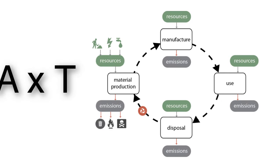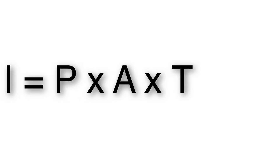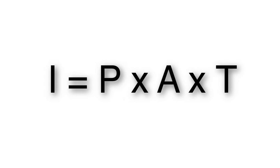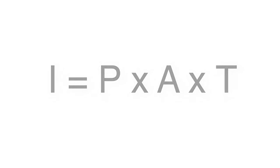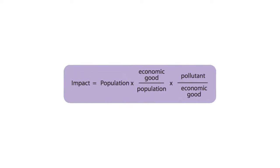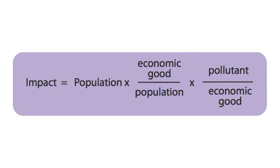Gains in efficiency of a particular process are mathematically bound by the laws of thermodynamics — that is, you can't get a process that is more than 100% energy efficient. So the impact per technology term has limits within a particular technology. What else can be done?